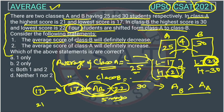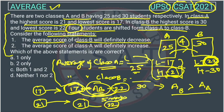Even if we shift the highest-marks students from Class A to Class B, the average of Class B will still decrease, because the maximum marks in Class A is 21, which is still less than Class B's average of 22. So in both cases, the average score of Class B will definitely decrease. This statement is correct.